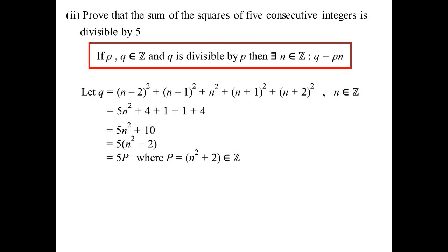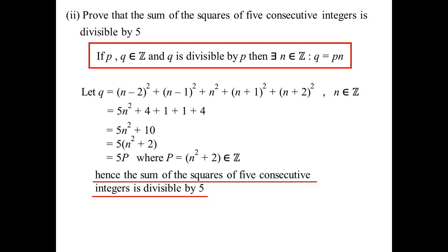The key question is: can I be confident that N² + 2 is an integer? Yes — N is an integer as defined in the first line. Squaring an integer gives an integer, adding 2 keeps it an integer. That's the key when setting out your proof — don't leave out defining N as an integer. It's only because N is an integer that I can call P an integer. Hence, the sum of the squares of five consecutive integers is indeed divisible by 5.